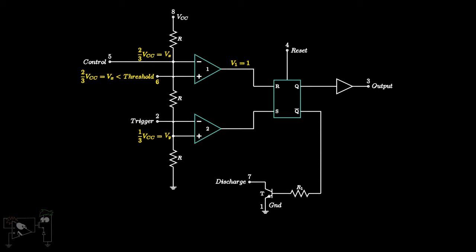For comparator 2, Vy is given to the non-inverting terminal. Hence, the output of comparator 2 V2 will be high, or digital 1, when the voltage at the trigger pin goes below 1 by 3 VCC.